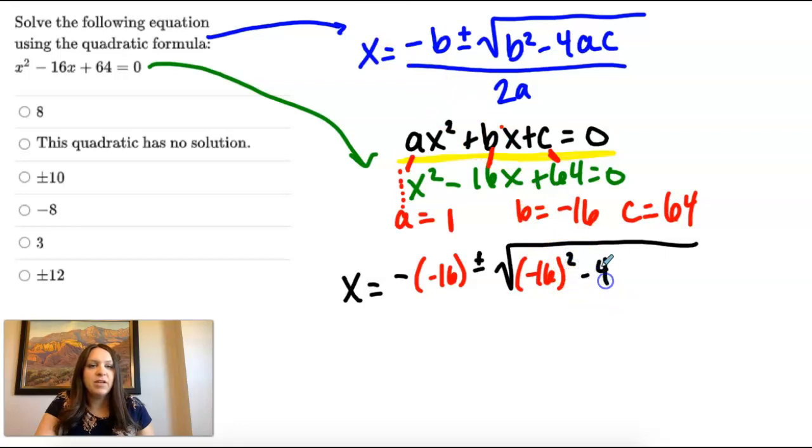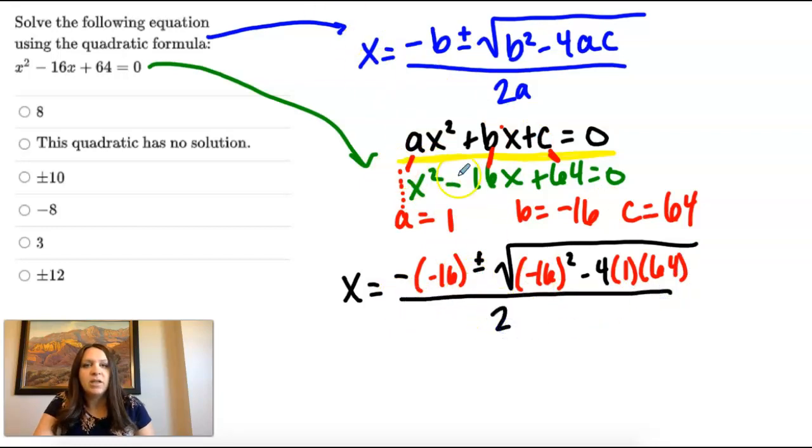Minus 4, times a, times c. And c is 64, a is 1. All over 2 times a, which is 1.